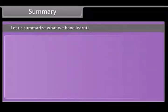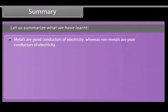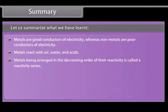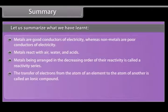Summary. Let us summarize what we have learnt. Metals are good conductors of electricity, whereas non-metals are poor conductors of electricity. Metals react with air, water and acids. Metals being arranged in the decreasing order of their reactivity is called a reactivity series. The transfer of electrons from the atom of an element to the atom of another is called an ionic compound. Metals are extracted from ores. The most widely used method for refining impure metals is called electrolytic refining.